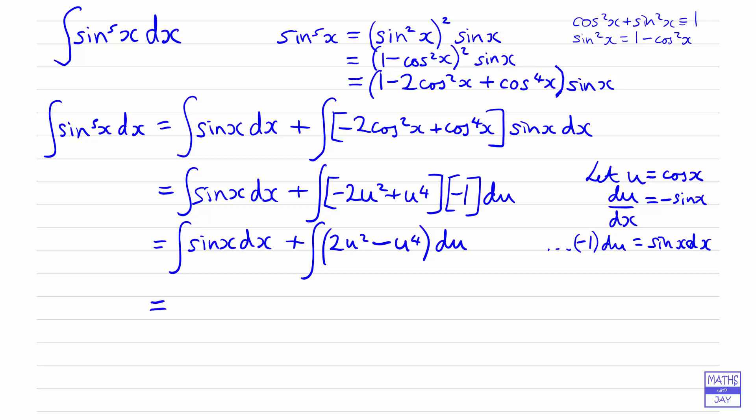So now we're ready to integrate. The first integral, integrating sine x dx, so that's going to be minus cos x. And then integrating 2u squared, so we will leave the 2. Integrate u squared, so we'll get u cubed over 3. And then integrating u to the power of 4 will be u to the 5 over 5. And then remember the constant of integration. So now all we need to do is to replace the u by cos x. So we've got minus cos x plus 2 thirds of cos cubed x minus 1 fifth cos to the 5 x plus c.